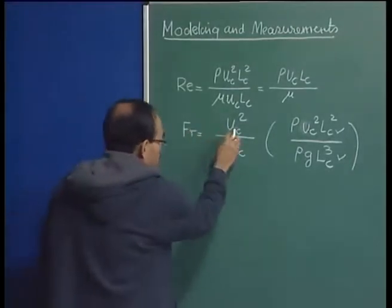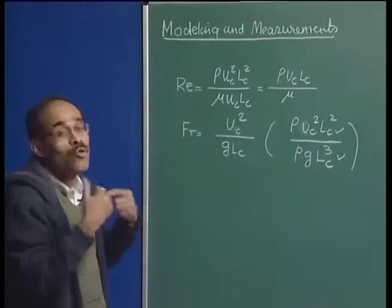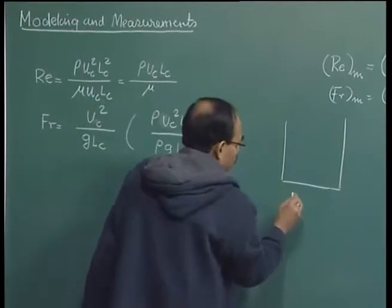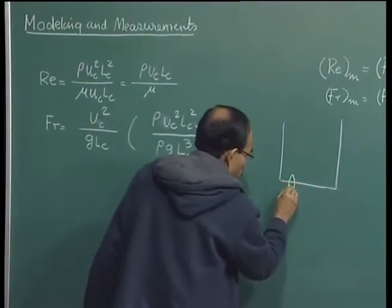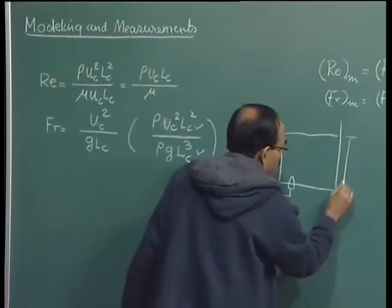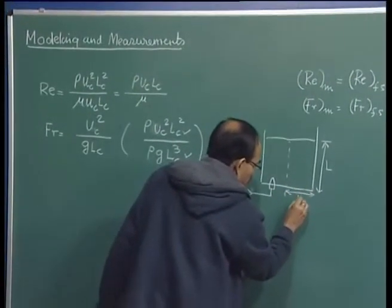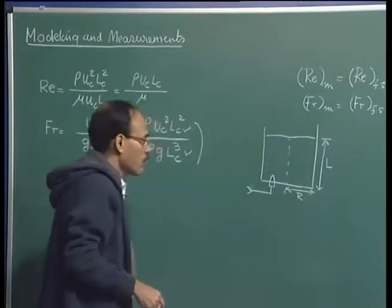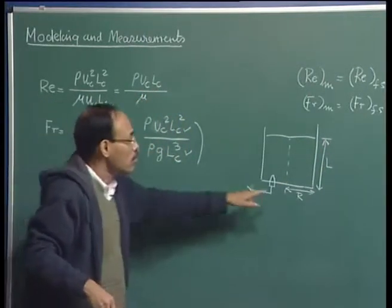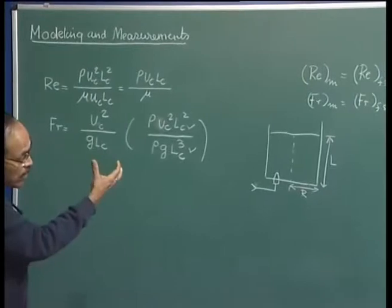Coming back to the issue of characteristic velocity and length scale: these are the velocities and length scales of the system known to us. For example, in a gas-stirred system with a porous plug at the bottom, you have the depth of liquid L and a radius or diameter of the vessel. Whether L — the depth of the liquid — or the radius of the vessel should represent the characteristic length is an important issue to decide, because it is not usually immediately clear.